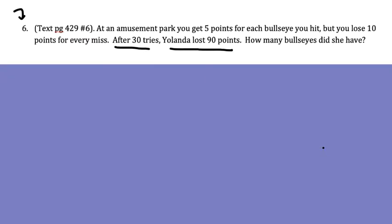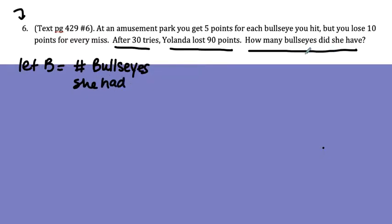Remember we get our variables from the question being asked. It says how many bullseyes but remember we need two unknowns. And so if it's asking about the bullseyes, the other unknown is how many did she actually miss. So I'm gonna let B equal the number of bullseyes she made.